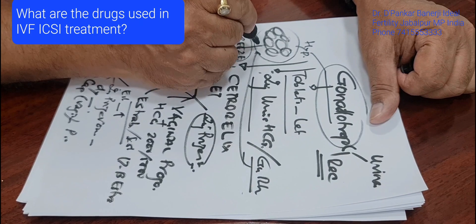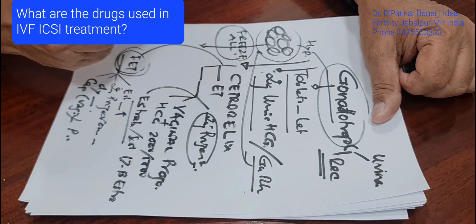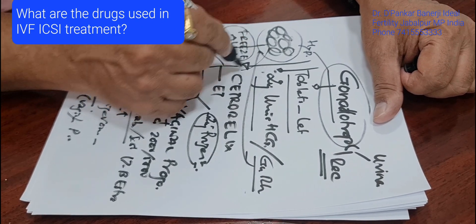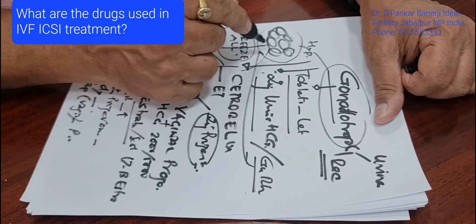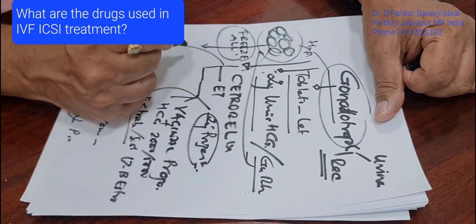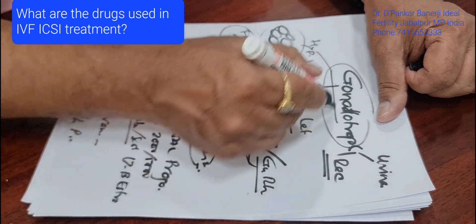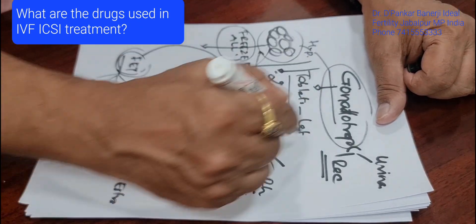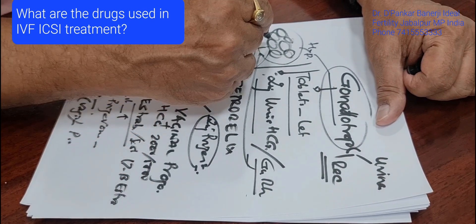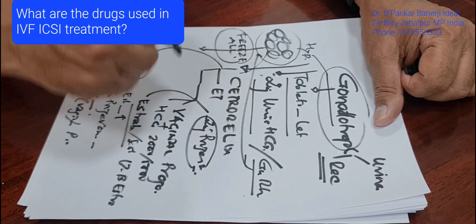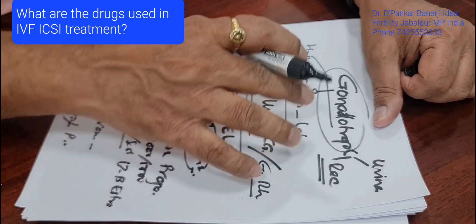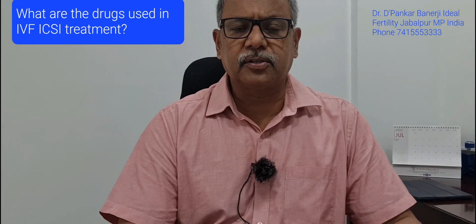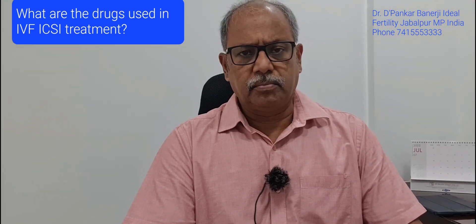By using the GnRH analog as the final maturation trigger injection instead of urinary HCG, we reduce the chance of ovarian hyperstimulation syndrome, which can sometimes be very severe and require ICU admission. With this technique, we try to make IVF safer and more user-friendly for the patient. Thank you very much.